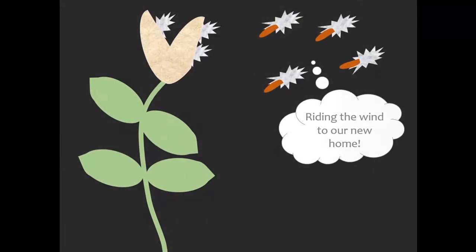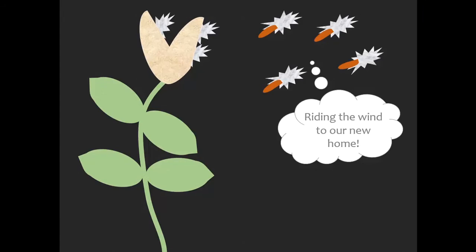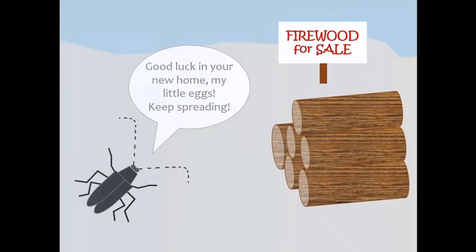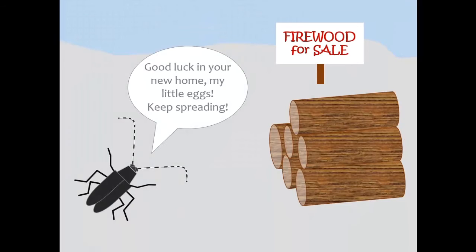They move by seed dispersal, like these milkweed seeds blowing away from their parent plant. And sometimes they hitchhike, like the insect eggs that will get moved in this firewood, or like the sticky burrs that get stuck on you when you walk through the woods.